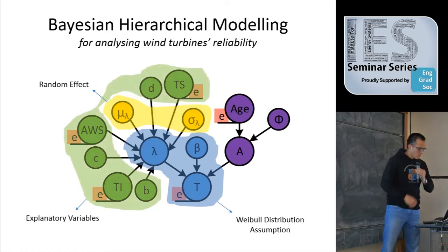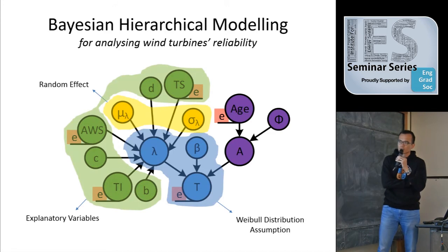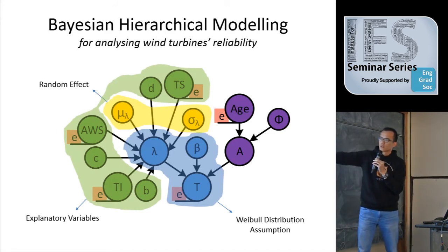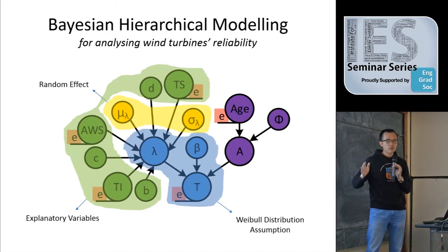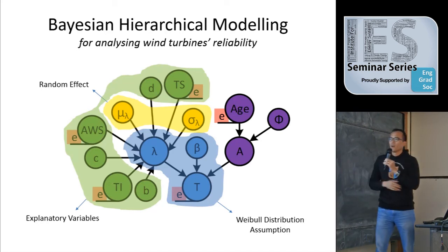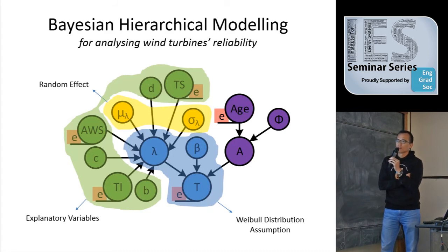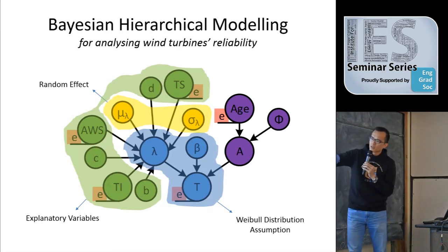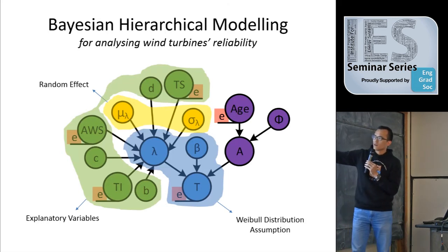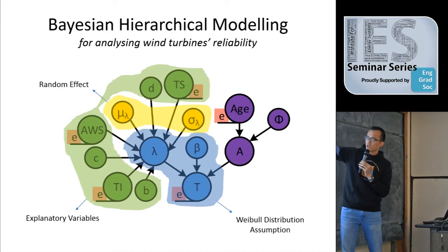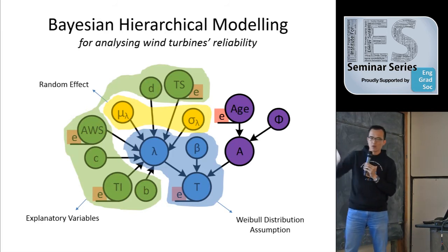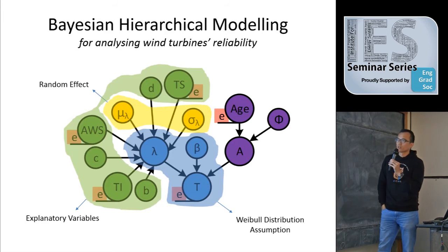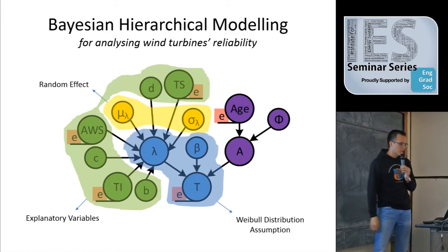On top of that, we add the explanatory variables, which are the environmental factors. All these nodes are dependent only on the scale parameter lambda, which means I only assume they affect the scale of the time-to-failure — they won't affect the failure characteristic. I use a simple log-linear relationship to add all of this to the scale. As you can see, we have turbulent intensity (TI), average wind speed, and terrain slope. The beta coefficients are used to quantify the effect of these real data variables. After the updating process, the beta coefficients will tell us how these three environmental factors affect the scale parameter and the time-to-failure distribution.